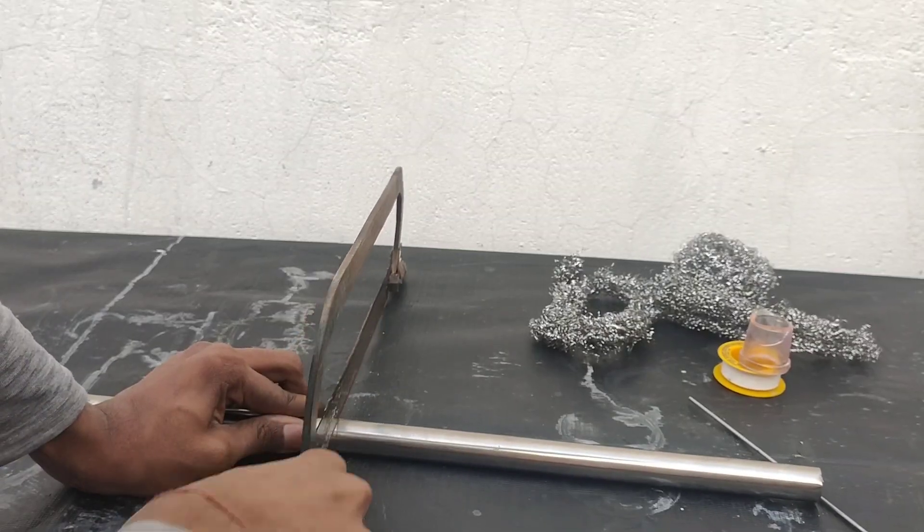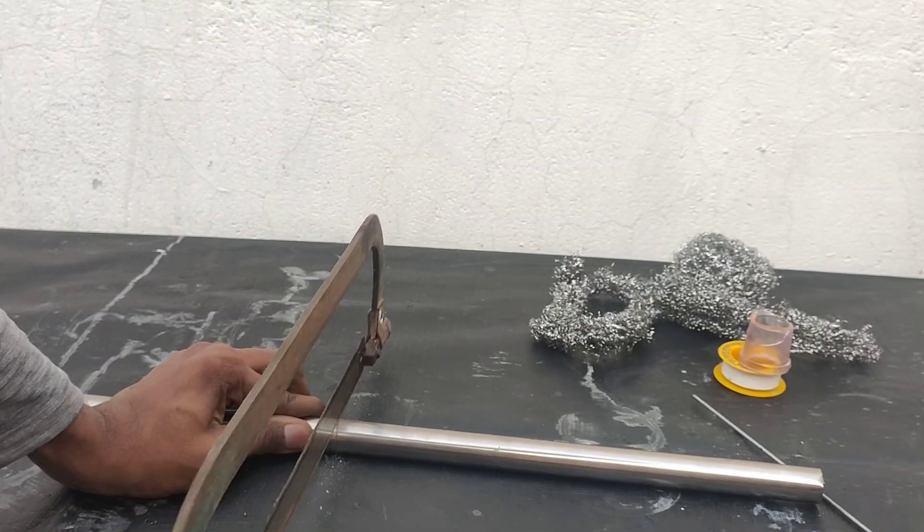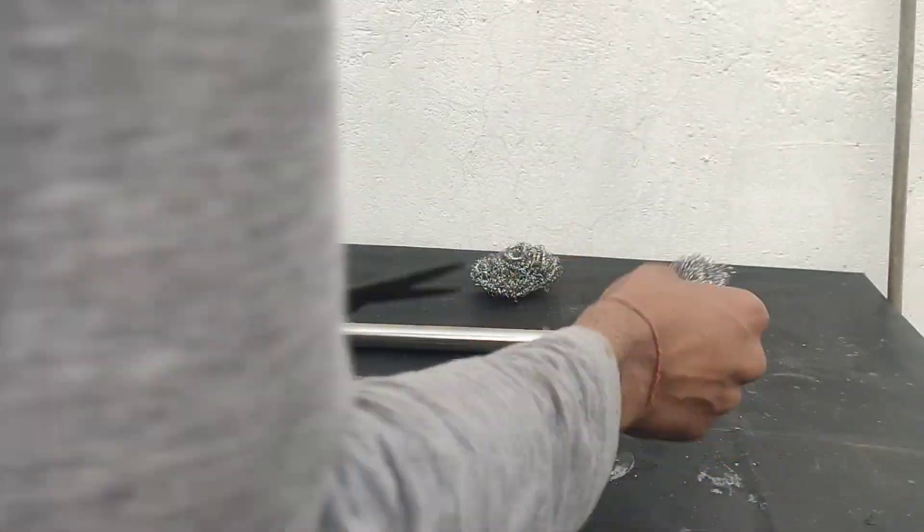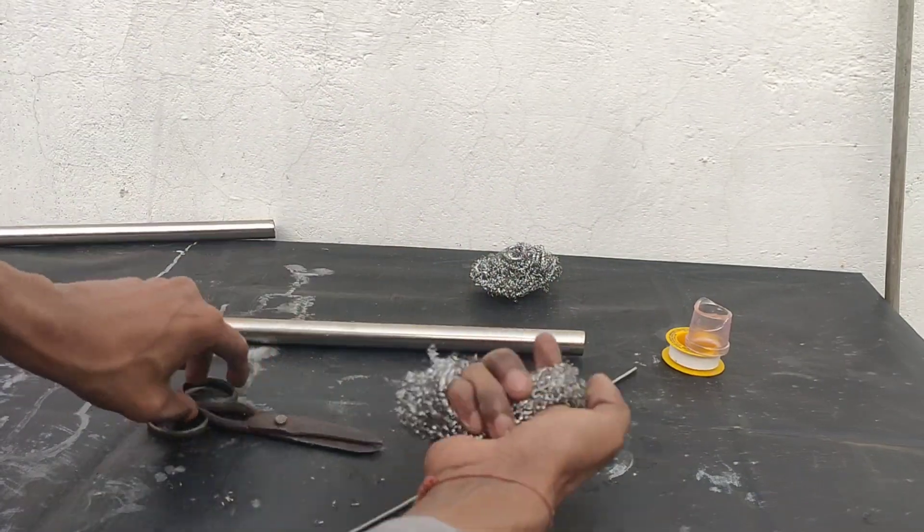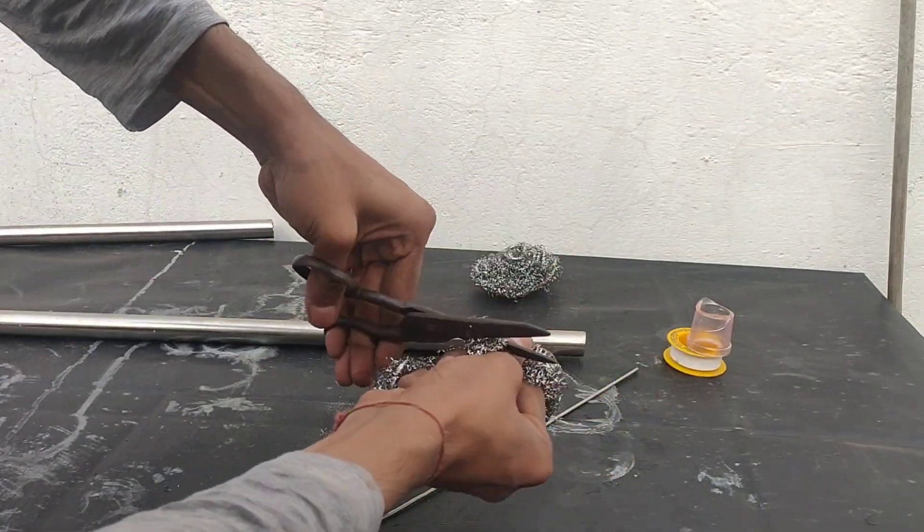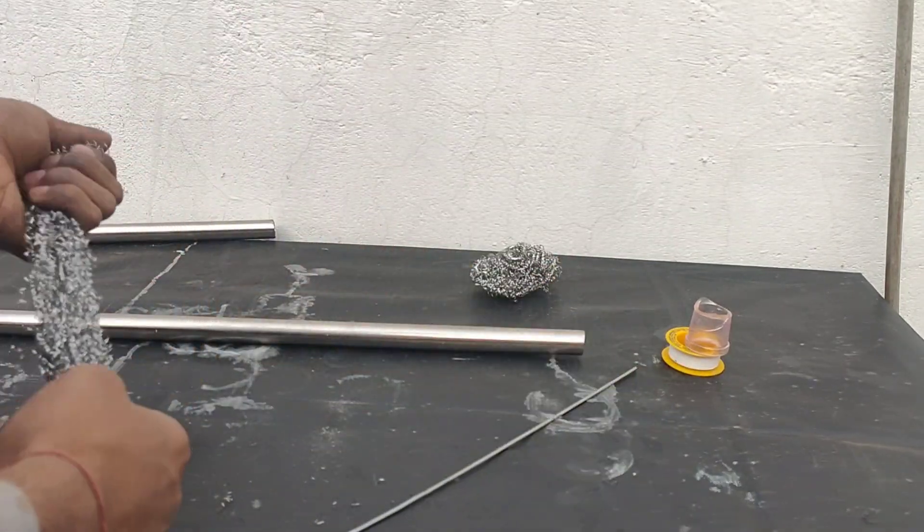First with the help of a hacksaw, I cut 45cm of the tube. To pack the steel wool, I stretched the scrubber like this and then cut it to open it. Now it can be fitted inside the tube.